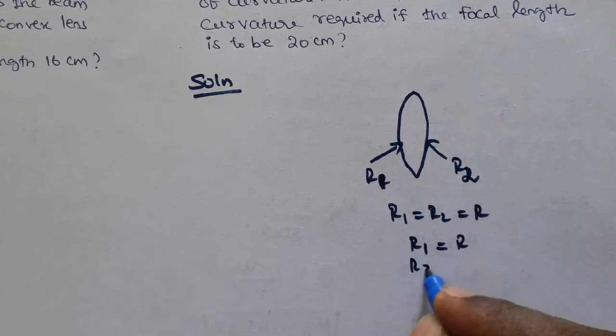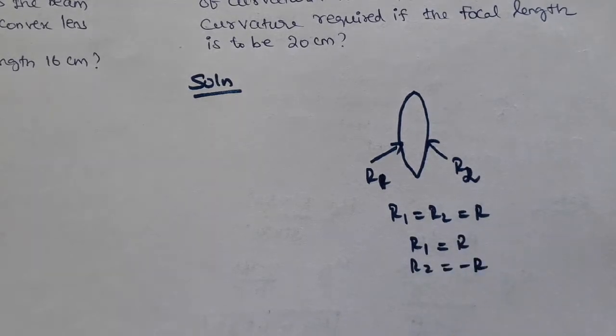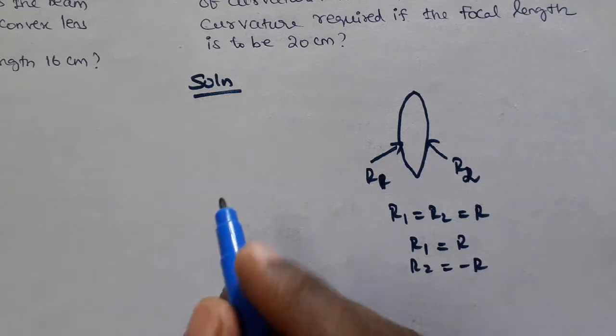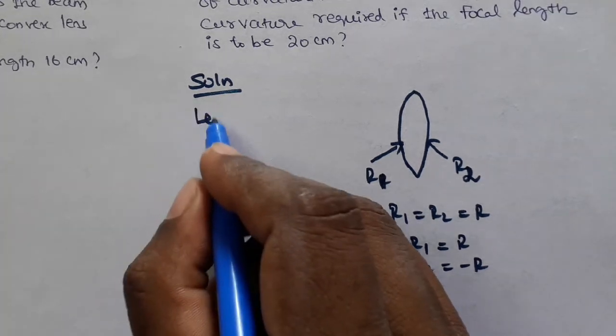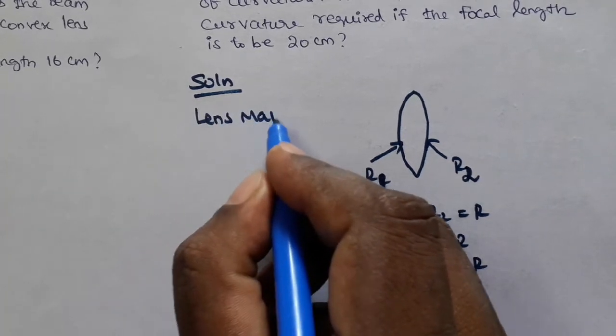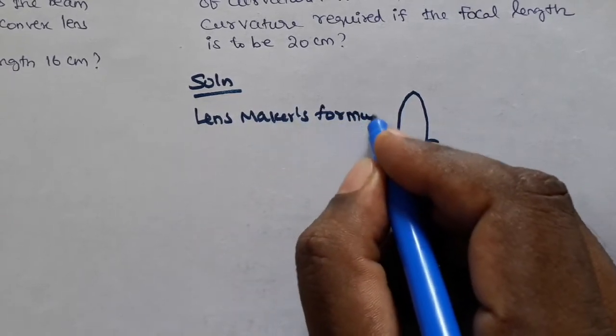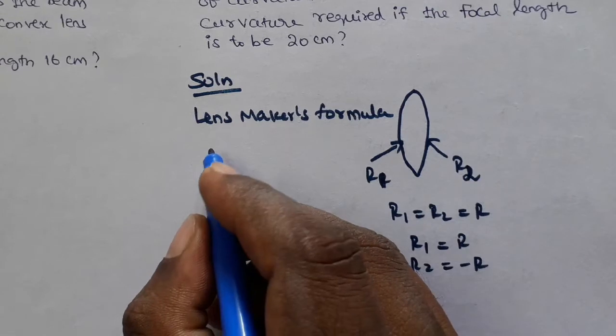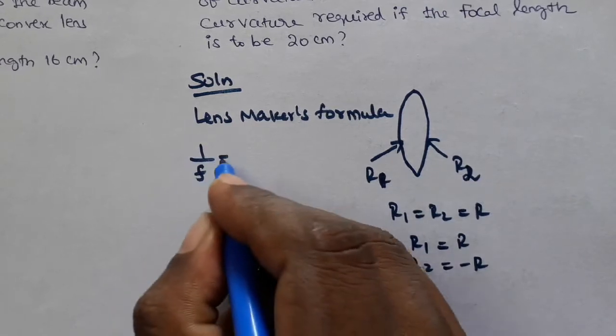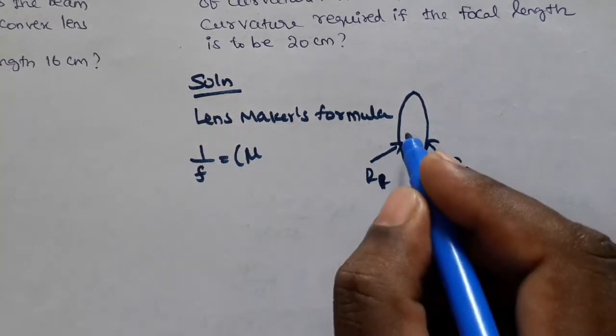For sign convention, the spherical surface on the right side gets plus R, while the spherical surface on the left side gets minus R. Now applying the lens maker formula.